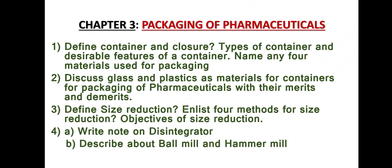Coming to chapter three: Packaging of Pharmaceuticals. There are seven important questions. Question one: Define container and closure, types of container, and desirable features of the container — note that desirable features, ideal qualities, and good qualities of a container are the same topic. Also, name any four materials used for packaging. Question two: Discuss glass and plastics as materials for containers for packaging of pharmaceuticals, with their merits and demerits.